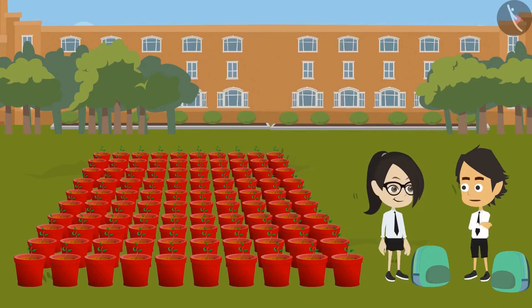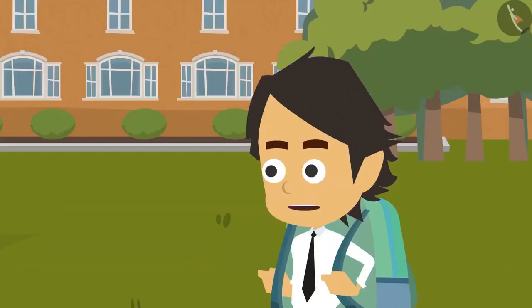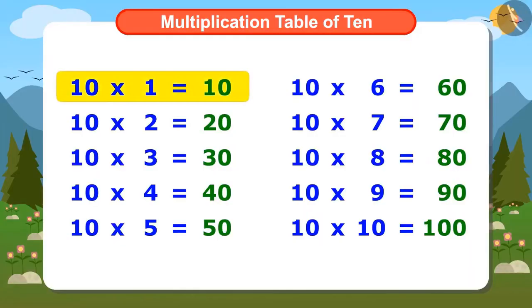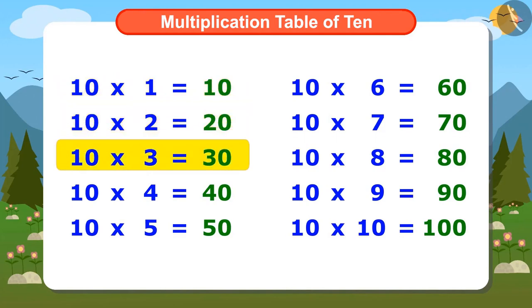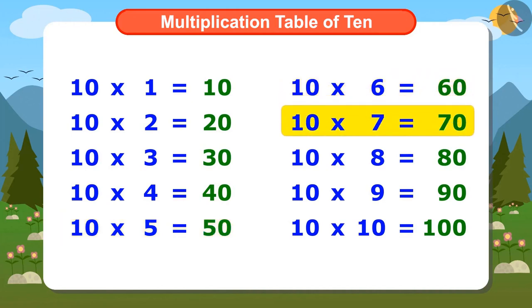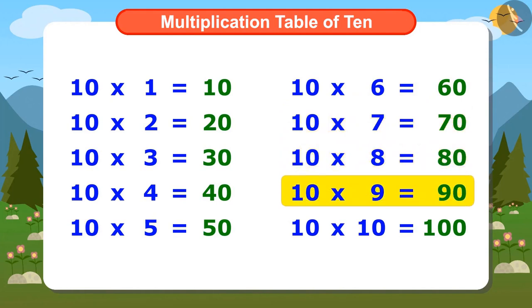Yes, that's the benefit of multiplication tables — without the use of paper and pen, you can solve some questions easily. Let me memorize by singing the multiplication table of 10: 1 ten is 10, 2 tens are 20, 3 tens are 30, 4 tens are 40, 5 tens are 50, 6 tens are 60, 7 tens are 70, 8 tens are 80, 9 tens are 90, 10 tens are 100.